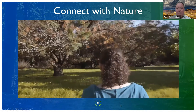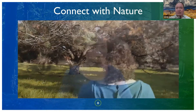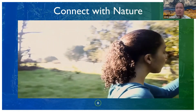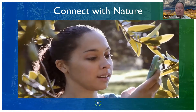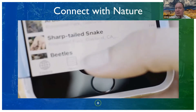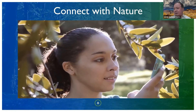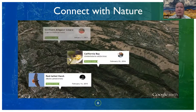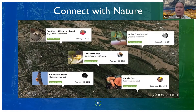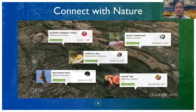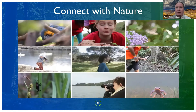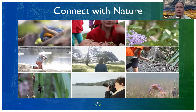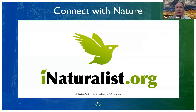iNaturalist is a social network where anyone can record and share their photographs of living things. When you share a photograph on iNaturalist, it becomes more than just a picture — it becomes an observation: a record of an organism in a place at a time. Each observation is shared with a global community of naturalists where it can be identified, discussed, and used to give us a greater understanding of life on Earth.